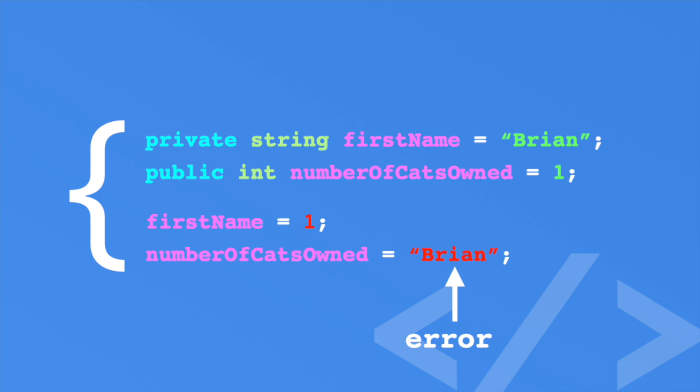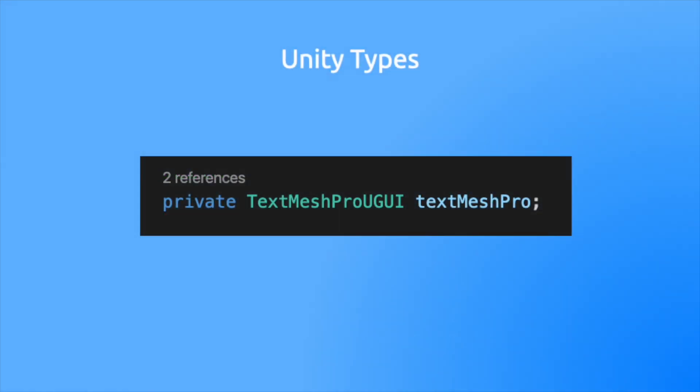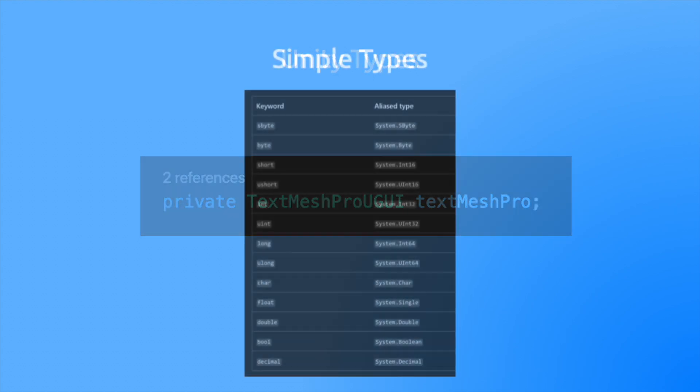In C Sharp, we have lots of pre-built types, but you'll also be defining your own. Remember the TextMeshPro UGUI, the type that we used in the first episode? That was a type defined by Unity. Whenever we create a new script in Unity, we are actually creating a new type. But let's not get ahead of ourselves. Let's focus on what C Sharp calls simple types.